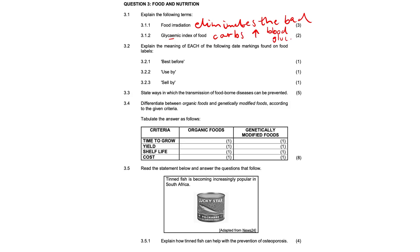Explain the meaning of each of the following date markings found on food labels. 3.2.1 — best before. This is the end period that the product will remain at its best quality. Products are safe for consumption after this date.